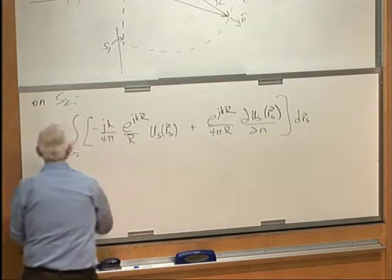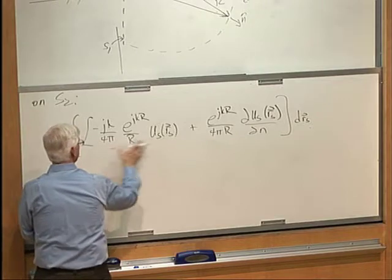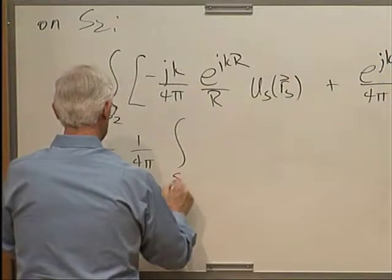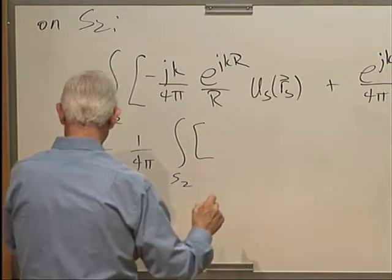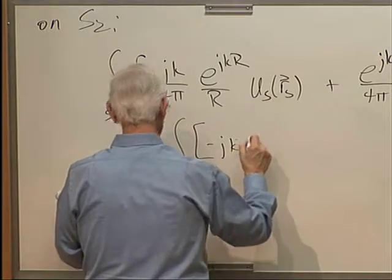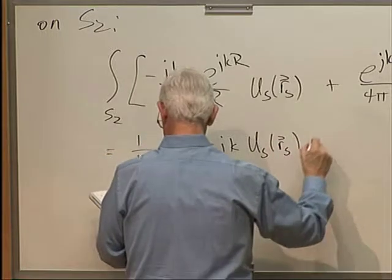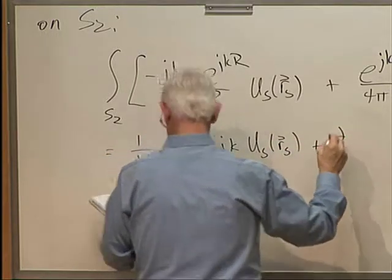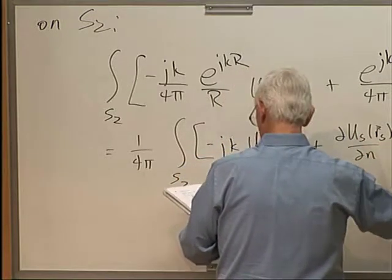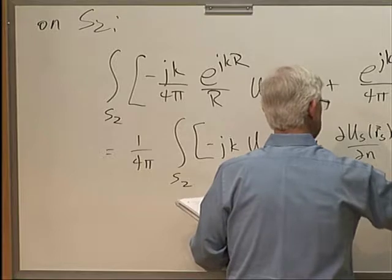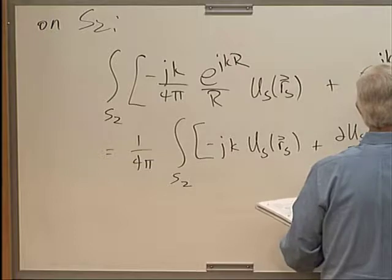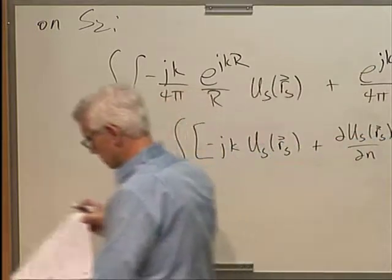So, what does this turn out to be? It's just taking the 4 pi's outside, integral over S2 of minus jk US RS plus partial derivative of US with respect to the surface normal, e to the jkR over R dRS.